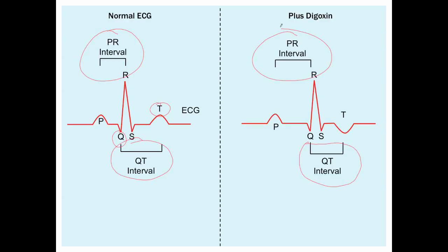This increase in PR interval relates to the indirect actions of digoxin. Indirectly, digoxin causes an increase in parasympathetic or vagal tone, which leads to a decrease in heart rate, a decrease in atrioventricular node conduction velocity, and an increase in AV node refractory period. Combined with decreased sympathetic nervous system outflow to the heart, this leads to an increase in the PR interval. Digoxin also leads to increased automaticity in the Purkinje system, which can contribute to delayed after-depolarizations. The combination of direct and indirect actions can also lead to changes in the ST segment and, over time, an inversion of the T wave.